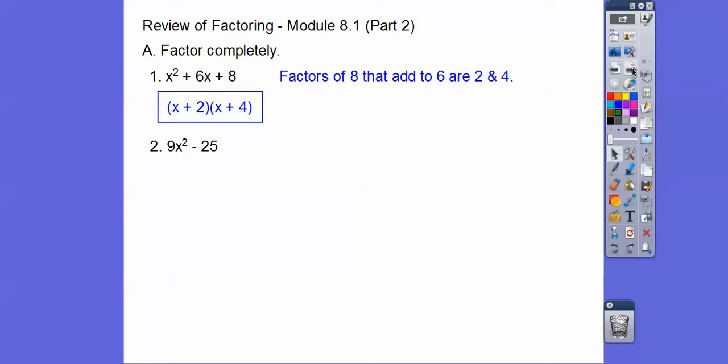Here we have a difference of squares. Remember, a difference of squares is (x + y)(x - y). So this is (3x)² and this is 5². There's our minus sign for the difference right there. So it's (3x + 5)(3x - 5).